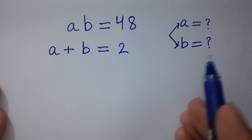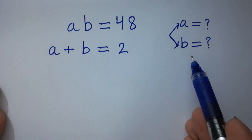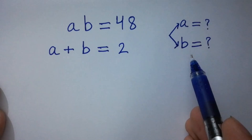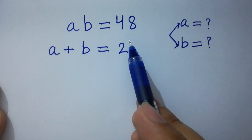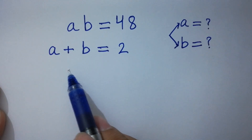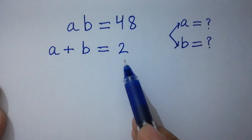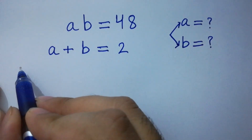Hello friends. Find the value of a and b if ab equal to 48 and a plus b equal to 2. Let's have a solution.